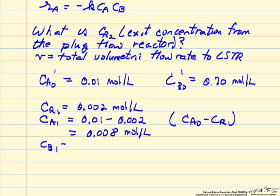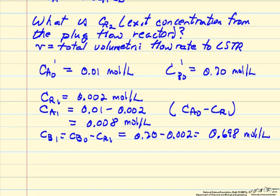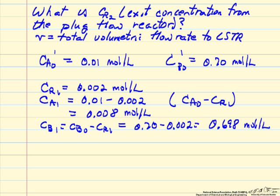Likewise, Cb1, Cb0 minus Cr1, there's so much higher concentration of B that it essentially is unchanged. And so we're going to assume, it should be a pretty good approximation, and it certainly makes the calculation much easier, that Cb is constant.